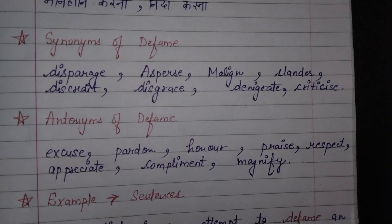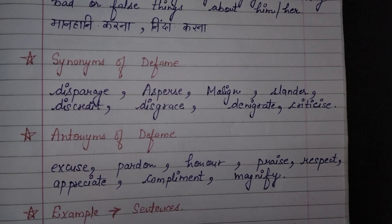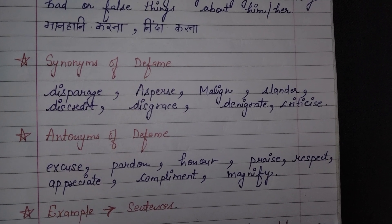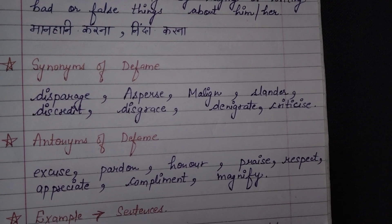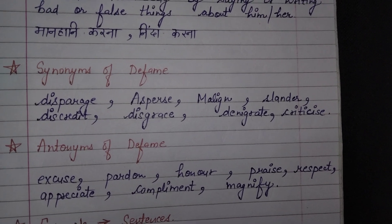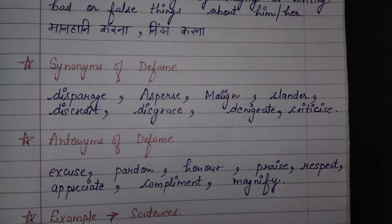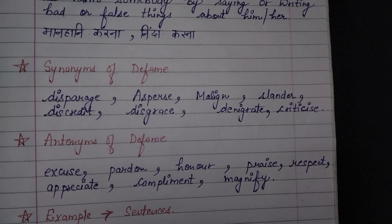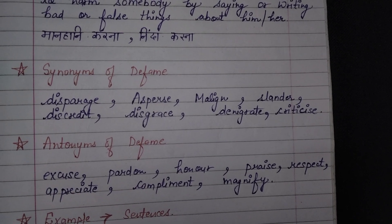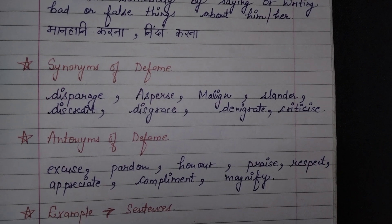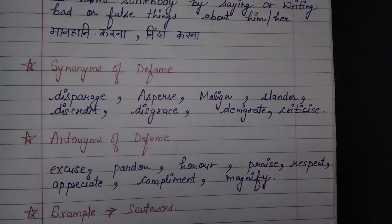Now we move on to the synonyms of defame. Synonyms of defame are: disparage, asperse, malign, slander, discredit, disgrace, denigrate, or criticize. Yeh sare hai synonyms of defame. Synonyms matlab hota hai milte julte shabd, yarni ki defame ki jaga kisi bhi sentence me ya English speaking me in words ka bhi use kar sakte hai instead of defame.